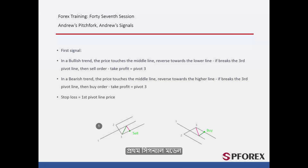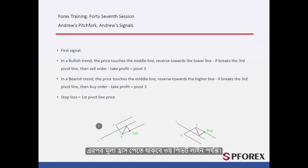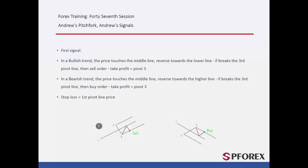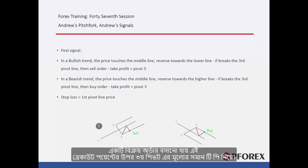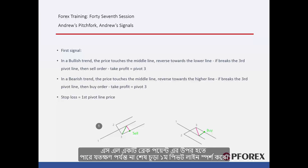First signal model. In a bullish format, after a price has reached the third pivot, it will increase until the first pivot line. Then the price will decrease until the third pivot line. A sell order can be placed on this breakout point with TP equal to the third pivot price. SL can be above the breakout point until the last peak that touched the first pivot line.